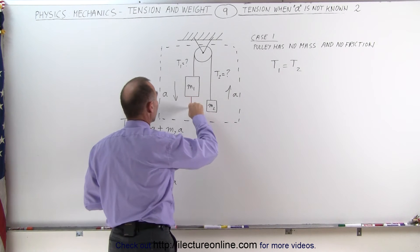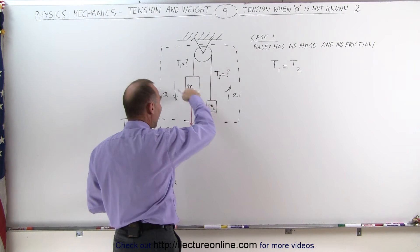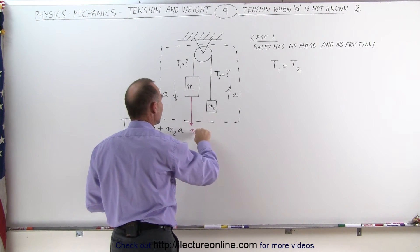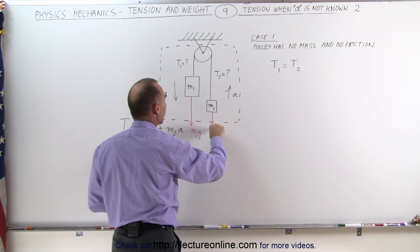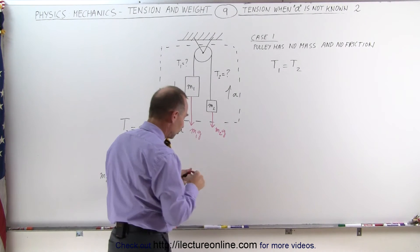The first force is the weight caused by the weight on M1, which is M1G, and the weight on M2, which is M2G. Those are the only two forces.